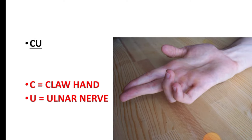Now coming towards Dr. Kuma: C.U. — C for claw hand, U for ulnar nerve. So claw hand is due to ulnar nerve injury.